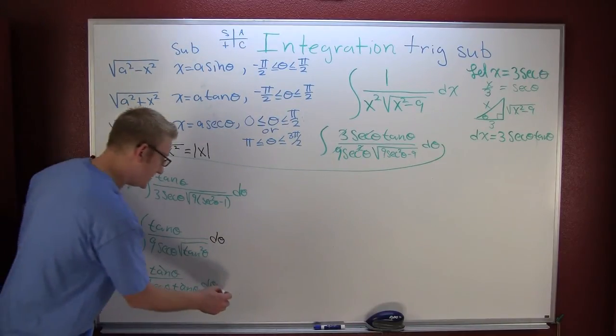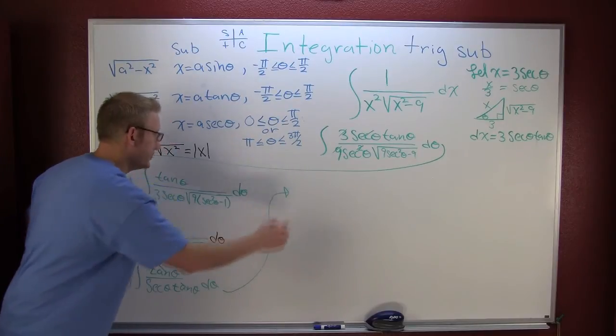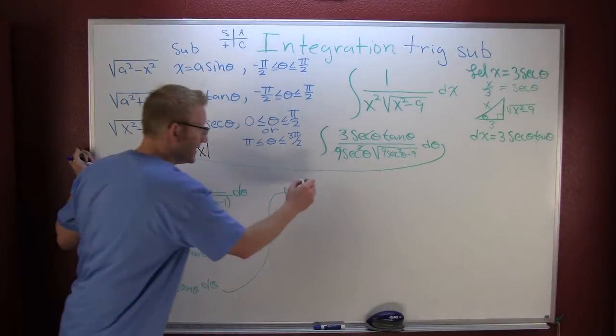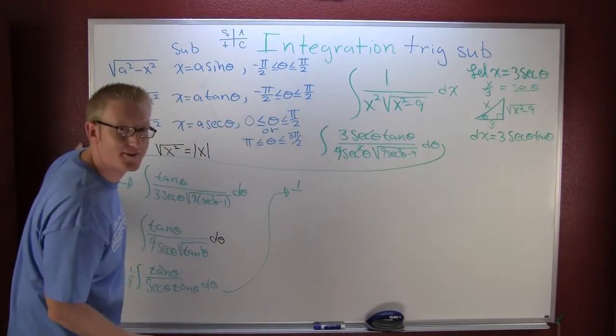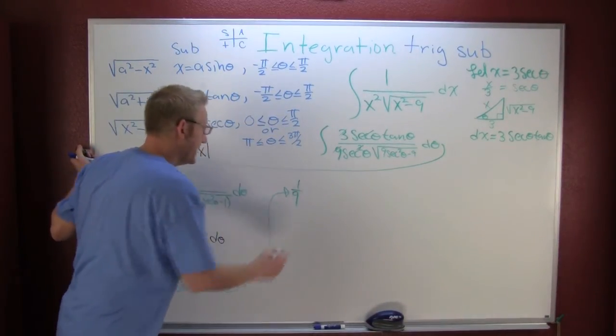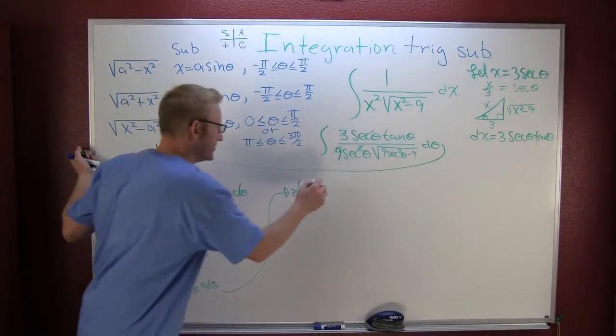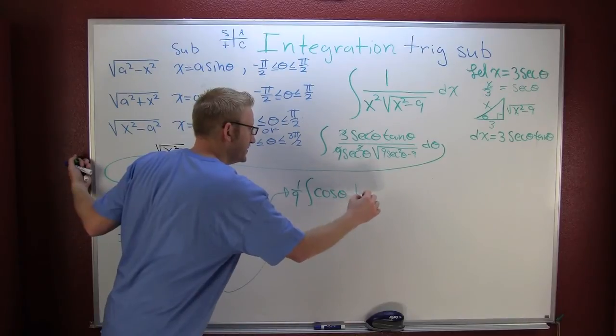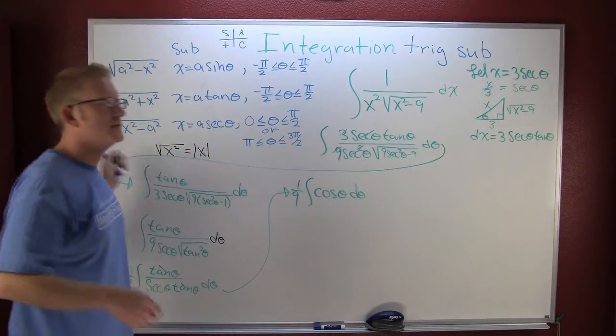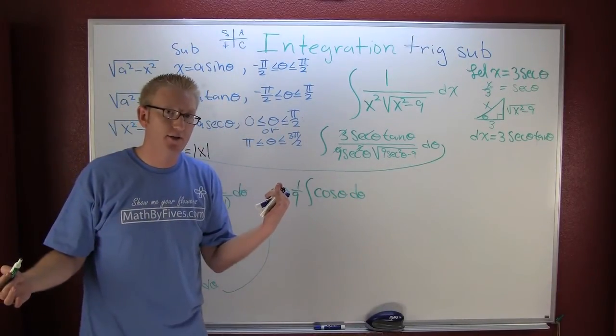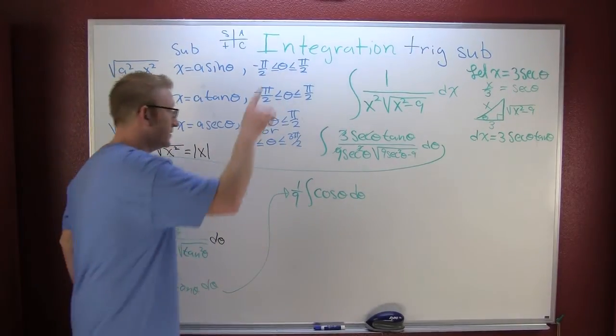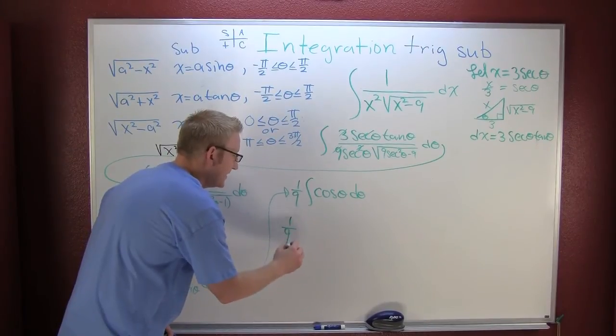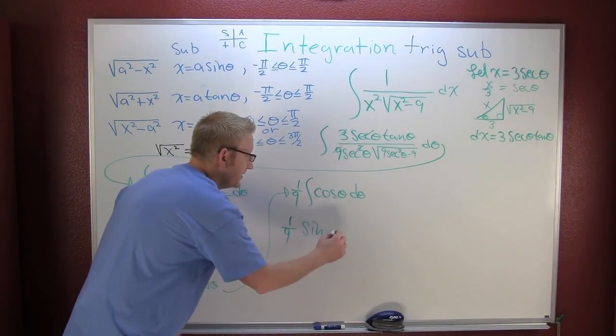One over the secant is the cosine. This really turns out nice. Now I'm looking at one ninth the integral the cosine theta d theta. So how does that cosine integrate? The integral is the sine. This is one ninth the sine of theta plus c.